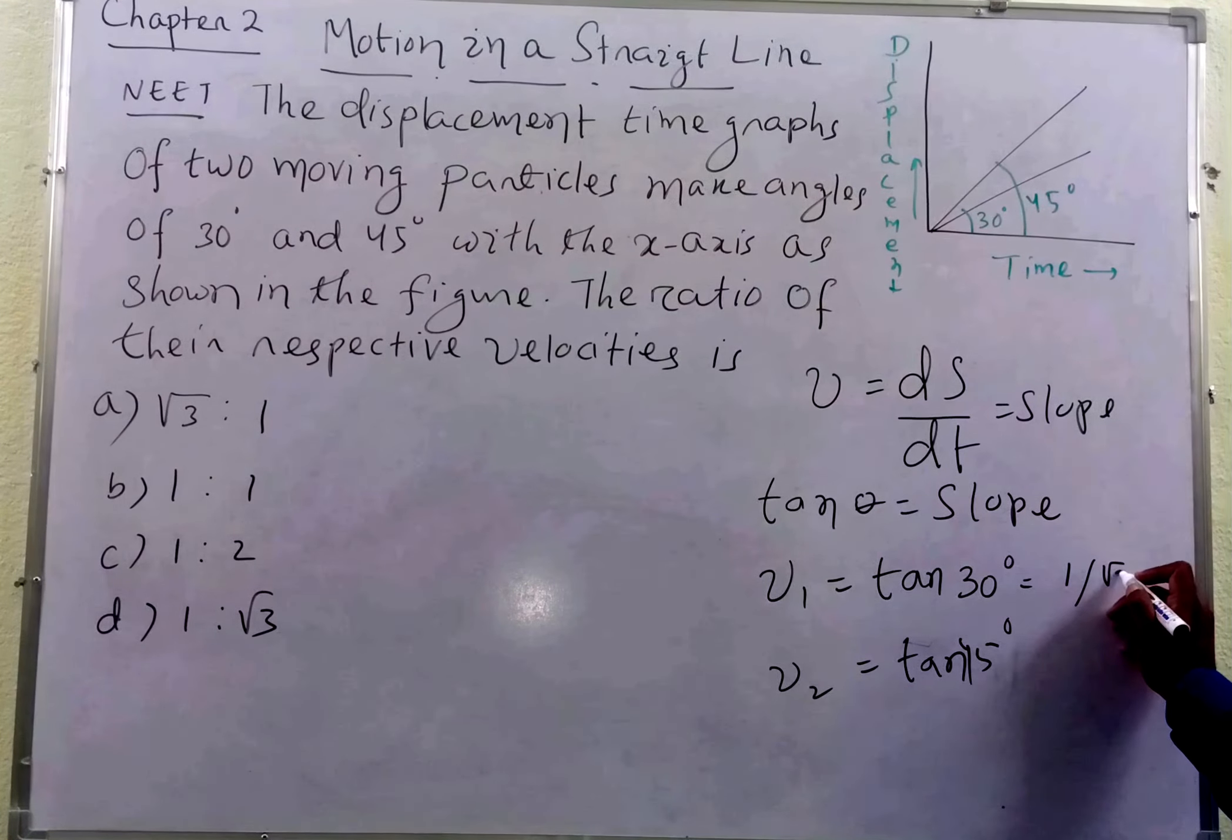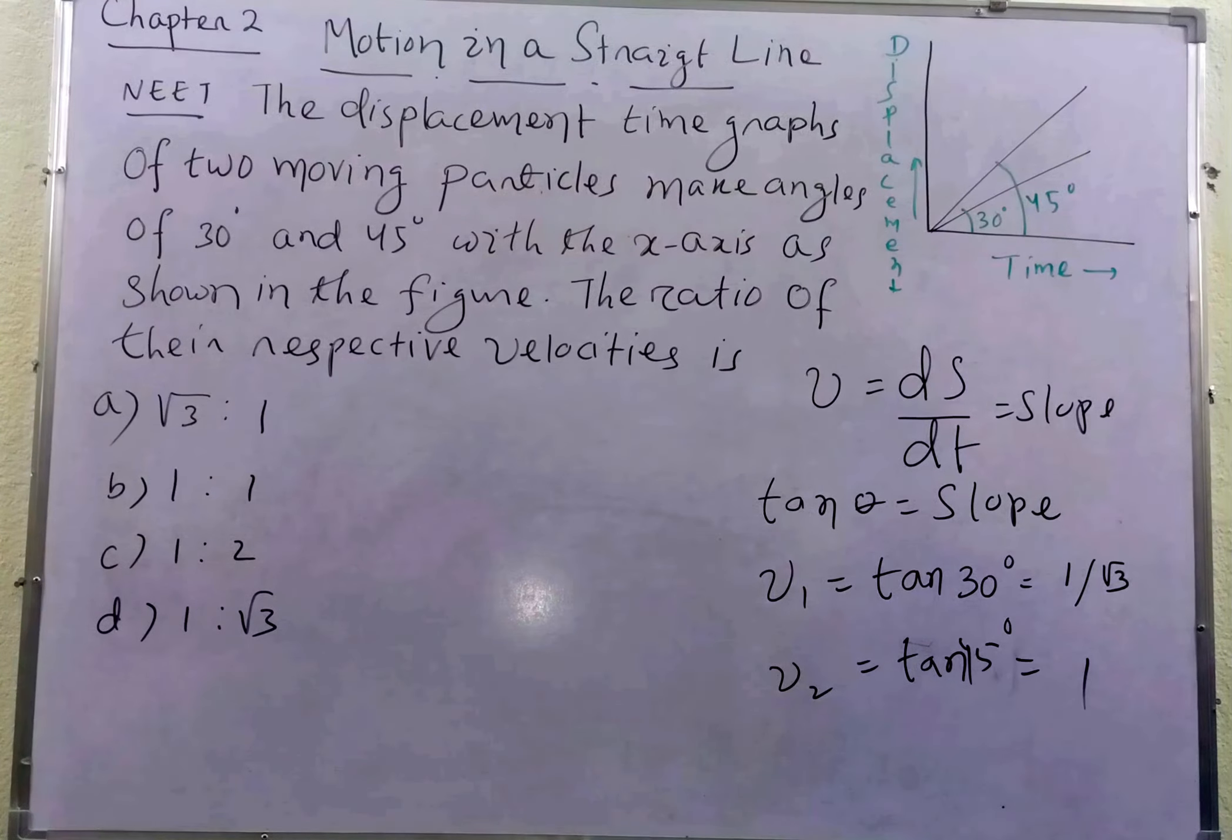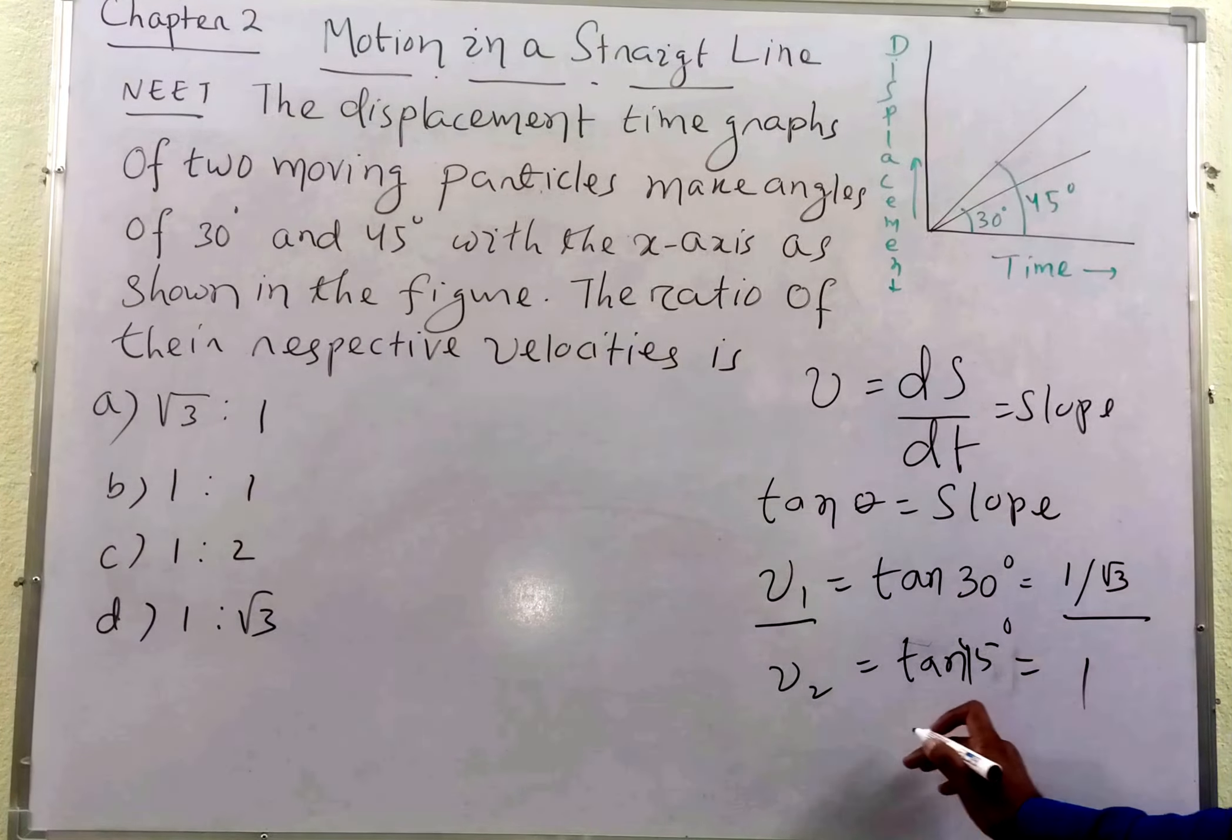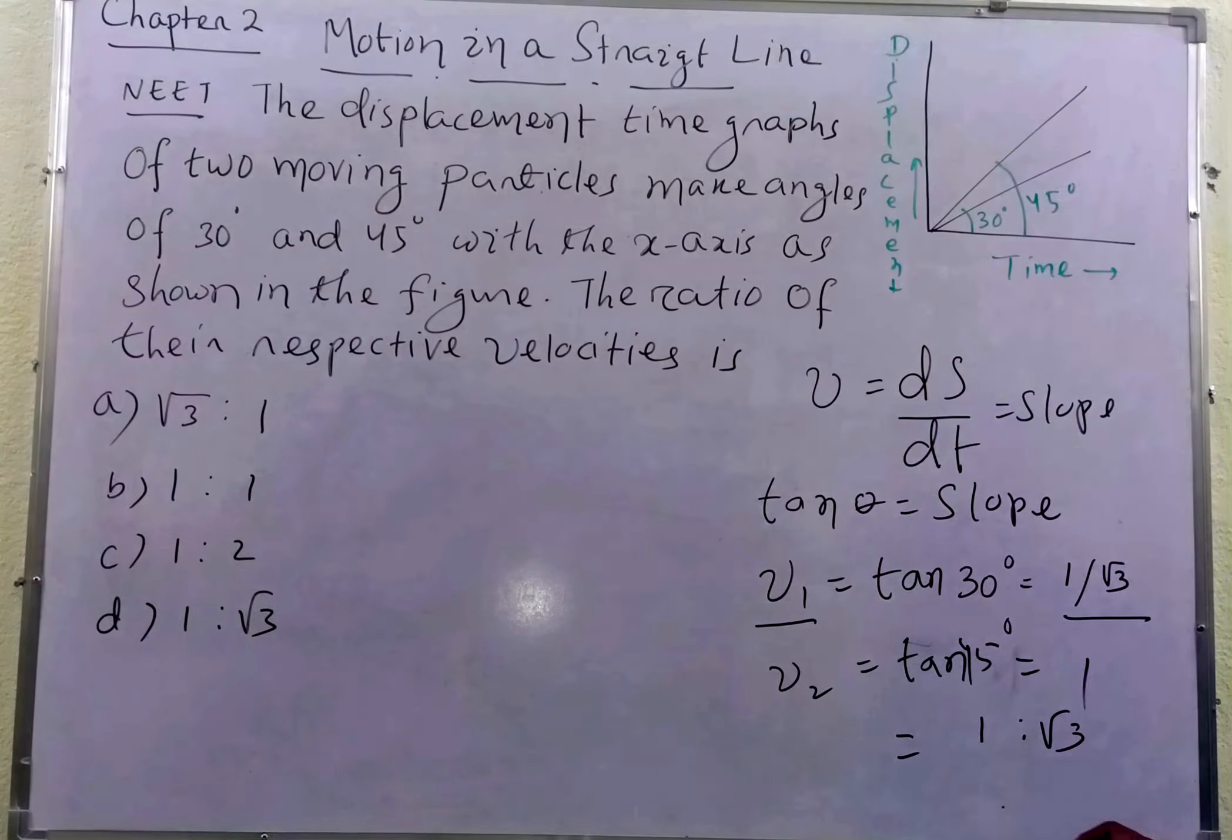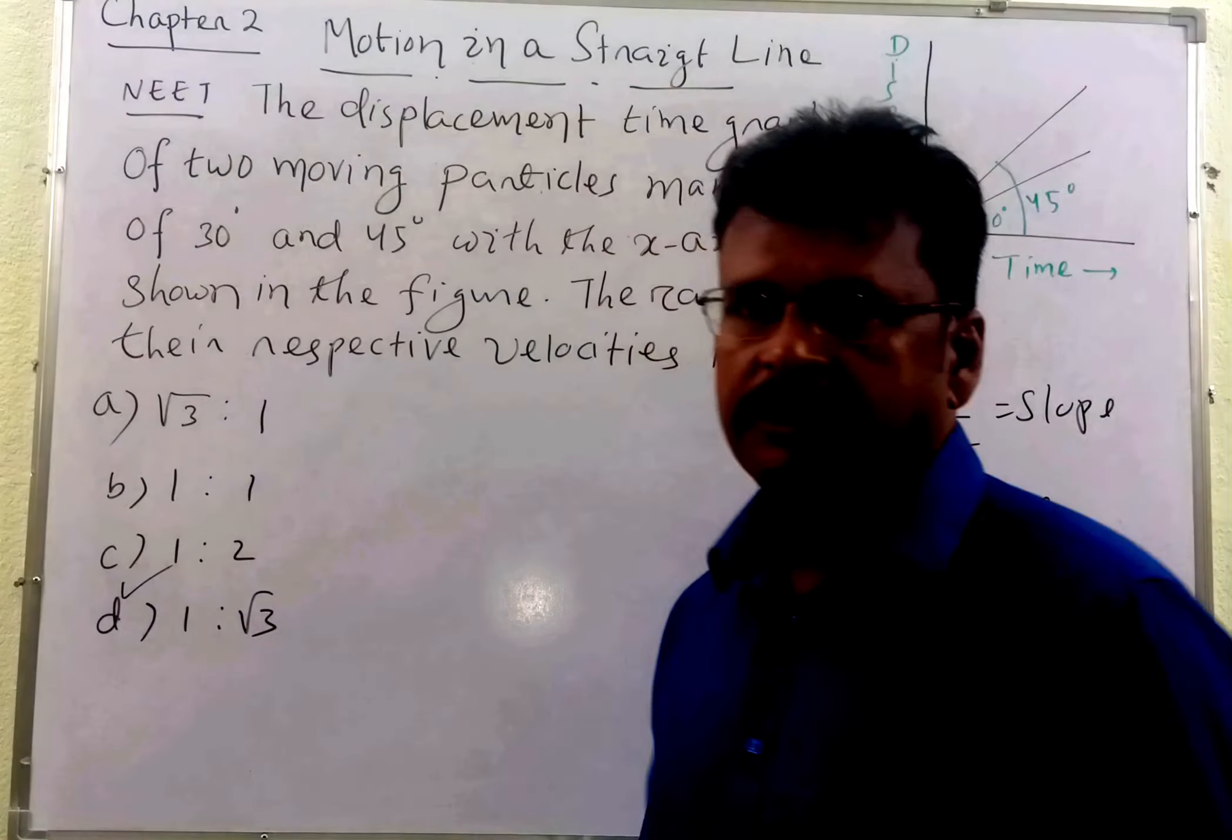And tan 45 degree is 1. So V1 by V2 is the ratio of their respective velocities. What is that students? 1 by root 3 upon 1. That will be 1 is to root 3. So 1 by root 3 will be the option D, which will be the correct answer students.